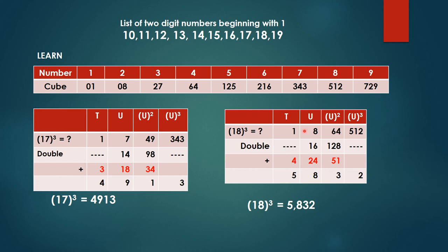Now double 8, double of 8 is 16, double of 64 is 128. Now add up all the numbers as told previously. So you will get 5832. So cube of 18 equal to 5832 or 18 to the power 3 is equal to 5832.